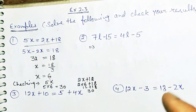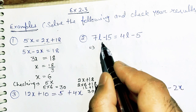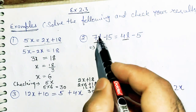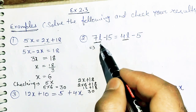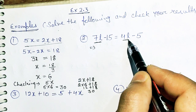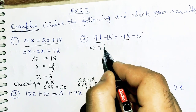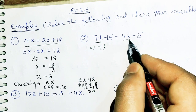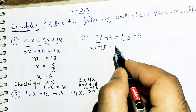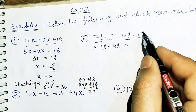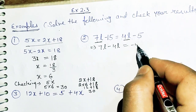Now the second part: 7L minus 15 equals 4L minus 5. So 7L and 4L are like terms with the same variable L. 4L is in plus on the RHS, it will move to the LHS as minus 4L. And what remains on the RHS? Minus 5.